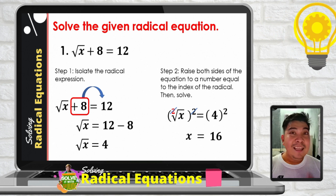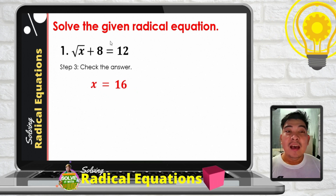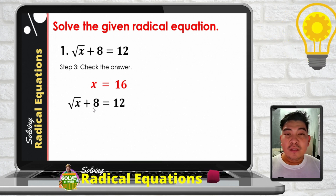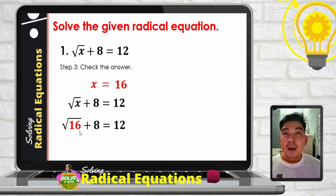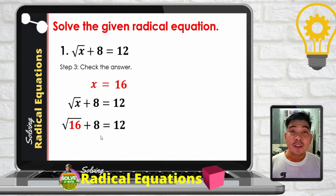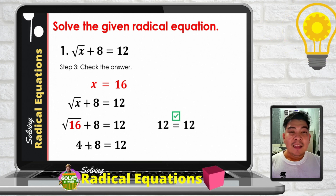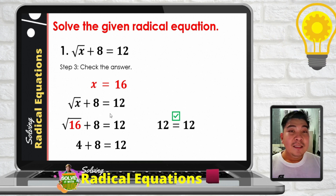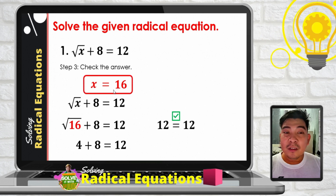After getting the value of x, we are not done yet. Step 3 is to check our answer by substituting back into the original equation. Substituting x equals 16 into the square root of x plus 8 equals 12: the square root of 16 is 4, and 4 plus 8 equals 12. Both sides are equal, so x equals 16 is the correct solution.